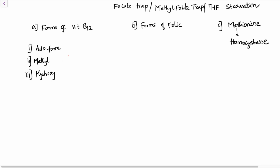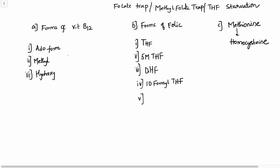The different forms of folic acid are: tetrahydrofolate (THF), second is 5-methyltetrahydrofolate, number three is dihydrofolate, fourth is 10-formyltetrahydrofolate, and fifth is 5,10-methylenetetrahydrofolate.